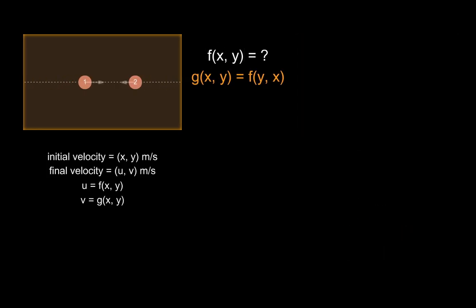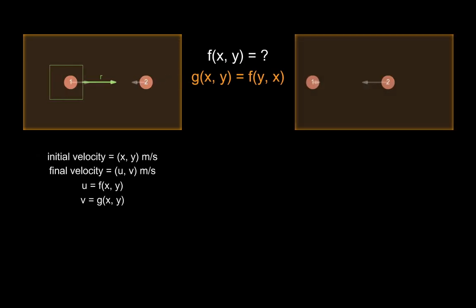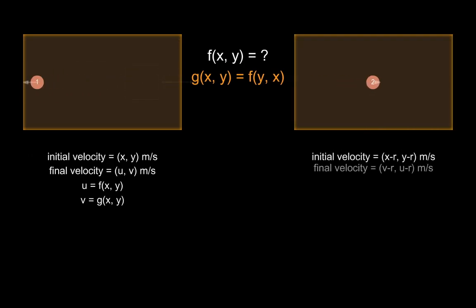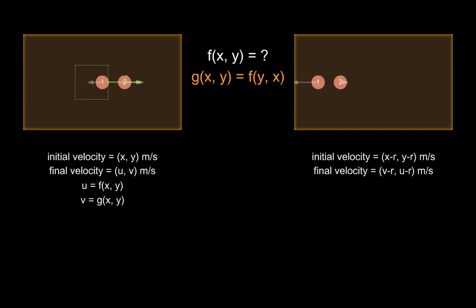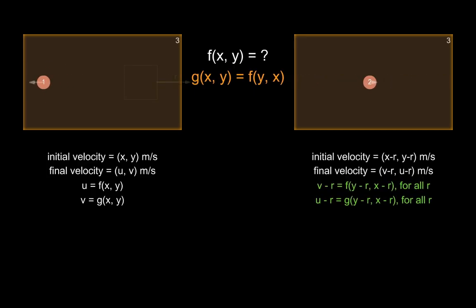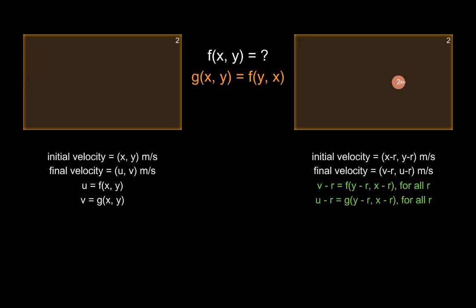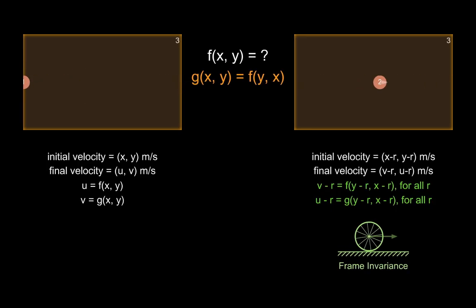Now let's consider the experiment from a moving frame of reference. In this frame, the initial velocities appear to be x minus r and y minus r, and the final velocities appear to be v minus r and u minus r respectively. The laws of physics remain the same in all frames of reference, giving us: v minus r equals f of (y minus r, x minus r) for all r, and u minus r equals g of (y minus r, x minus r) for all r. This is frame invariance — our last postulate.